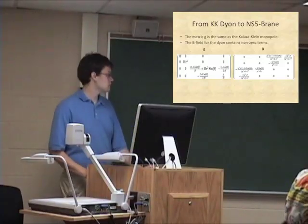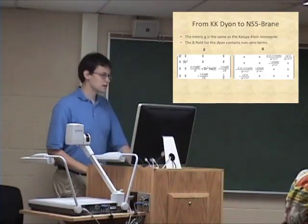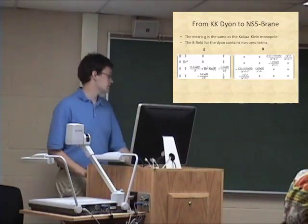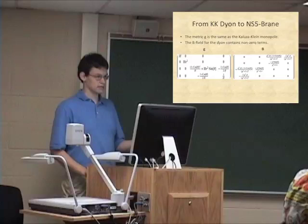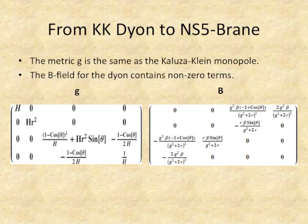My next step was to take the Kaluza-Klein dion and transform it into an NS5 brane — to figure out what the T-dual NS5 brane is. First I needed the metric and the B field for it. The metric is exactly the same as the monopole's metric, with all terms in the same place. But the B field contains these interesting non-zero terms off the diagonal, whereas with the monopole they were all zero.